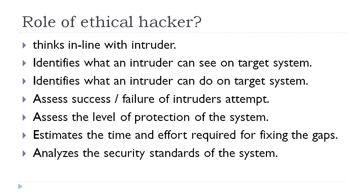Next, the ethical hacker identifies what an intruder can do on the target system. With the identified vulnerabilities from the previous step, the ethical hacker can predict what different accesses the hacker will gain and what possible attacks can be launched on the target system. This means the ethical hacker here will do the third phase — gaining of access — that means he can predict how the hacker can gain control of the target system.